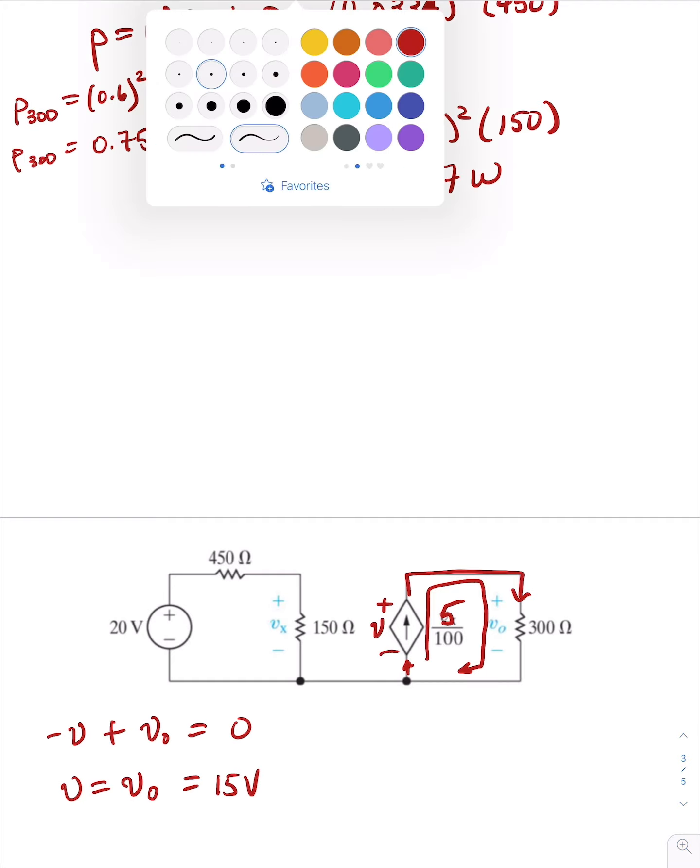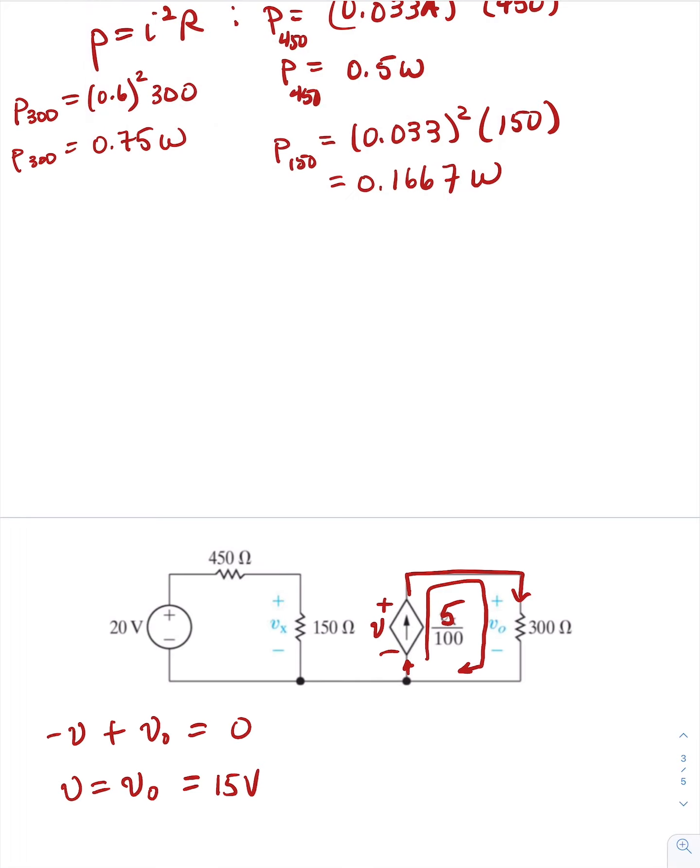If we calculate the power across the dependent source, power equals VI. We are entering the negative terminal, so it would be minus. The voltage we said was 15 volts, and the current is 5 over 100, which is 1 over 20, which is 0.05. Let me get the calculator. 15 times 0.05 is 0.75 watts.